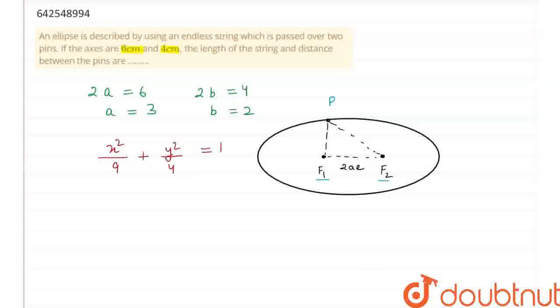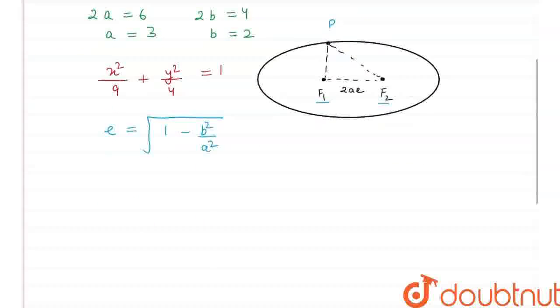We need to find the value of e and we also know that e is equal to under root of 1 minus b square upon a square that would be equal to under root 1 minus 4 by 9 which would be equal to root 5 by 3.